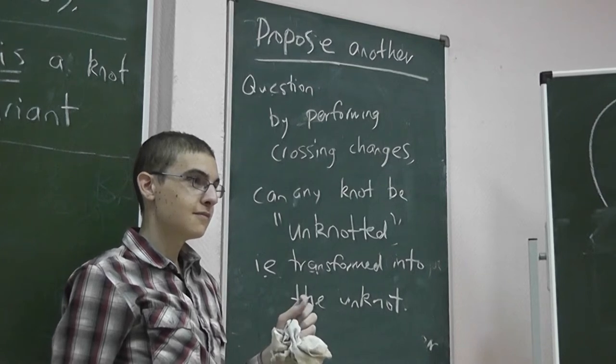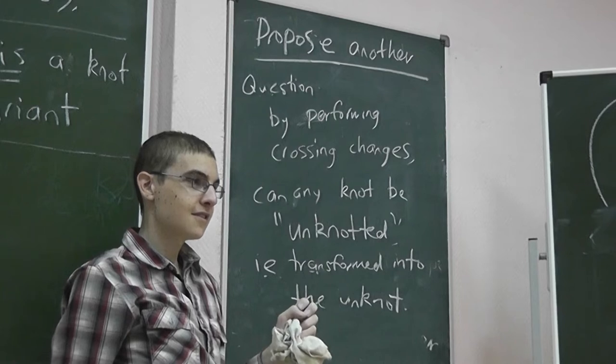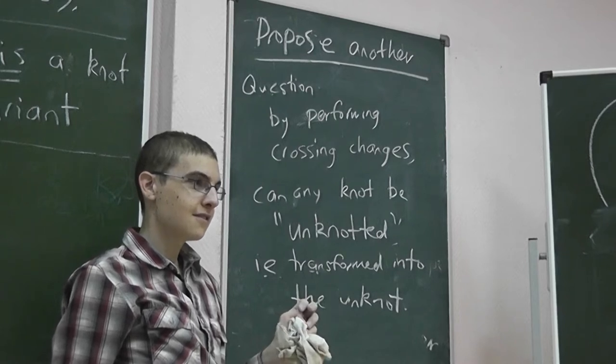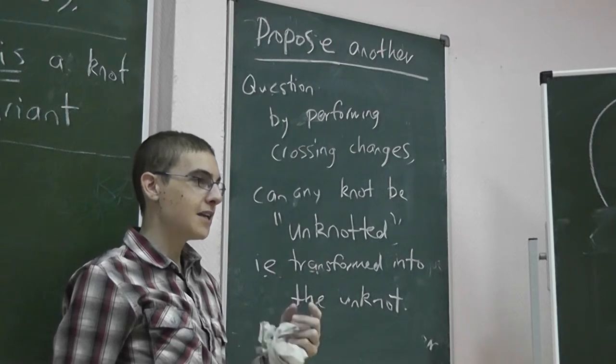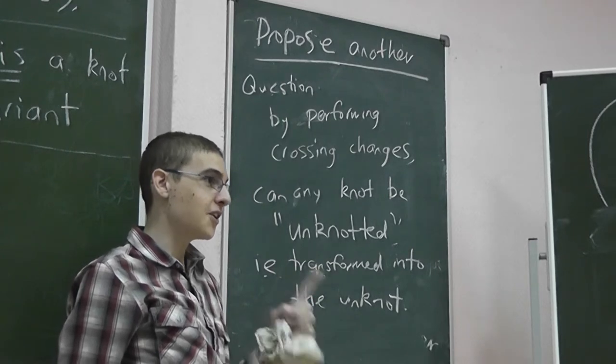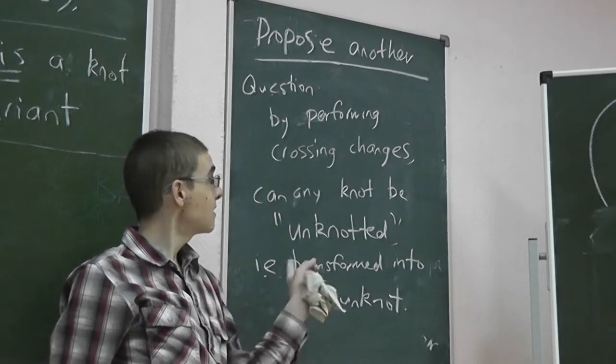If I give you a diagram, can I turn it into an unknot? Would I need infinitely many crossing changes? Well, if you have a limited number of crossings on a diagram, then you have a limited number of options. So if you can, then you can do it. Okay, so can we put together an argument that this is true?